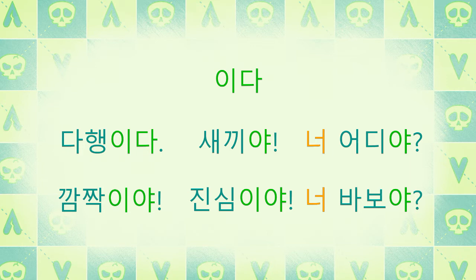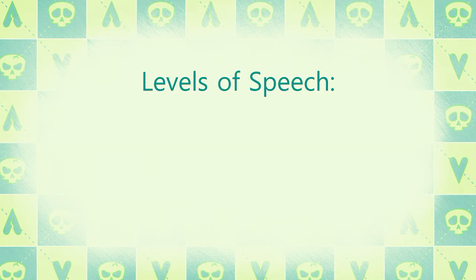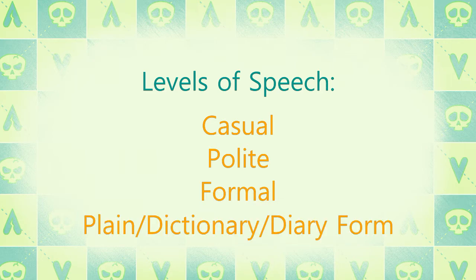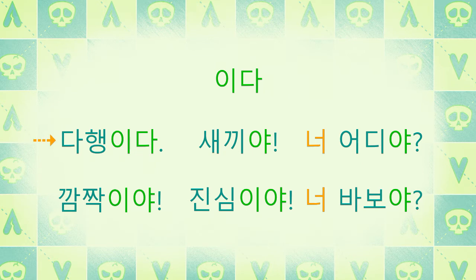Like I've said in a previous episode, subjects are often omitted because they're implied. So the subject, which would be Noun A, usually is omitted. 이다 is conjugated in the casual level of speech, which is called 반말. Polite and formal levels of speech would be called 전댓말. In Korean, there's levels of formality with speech — I break them up into three categories: casual, polite, and formal. But there's also plain form, or dictionary form or diary form. That's when you take 이다 and don't change it at all — it stays 이다. That's what you see with 다행이다. And one reason for using that form when speaking is when you're talking to yourself, since you don't have to use any level of politeness.